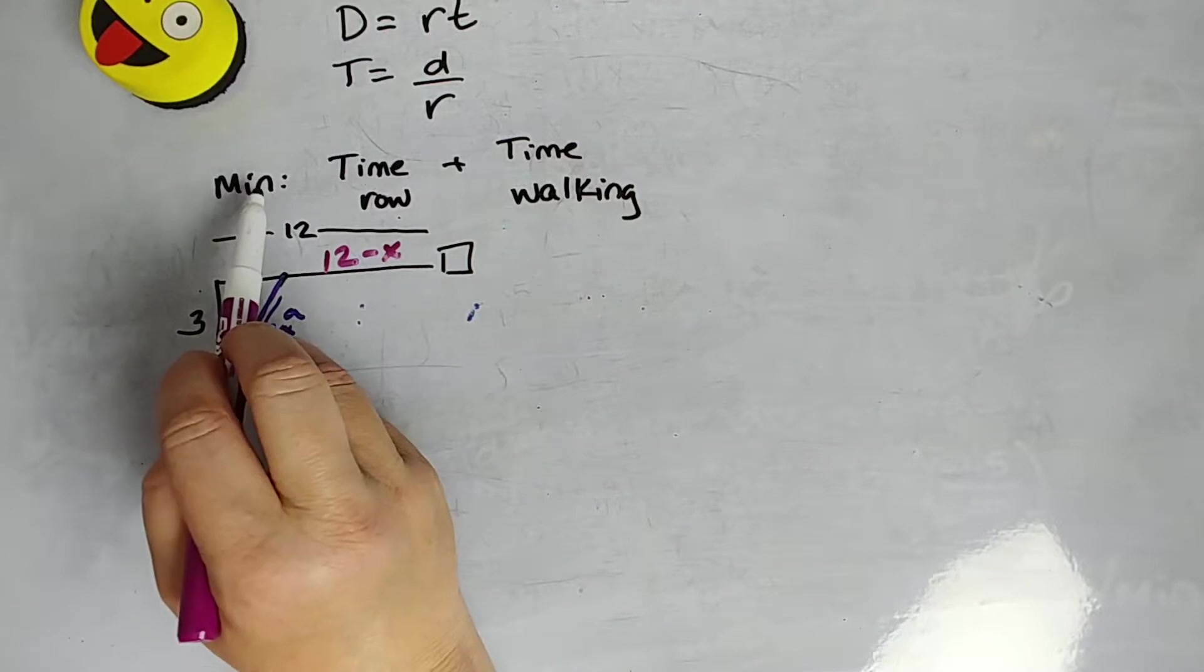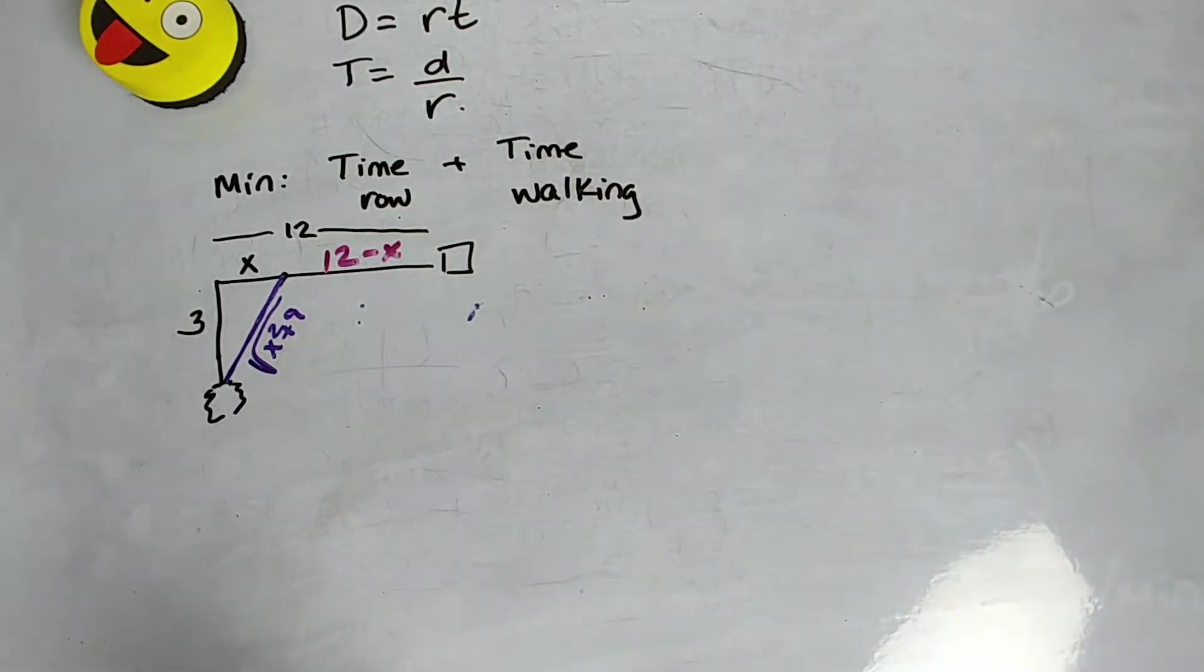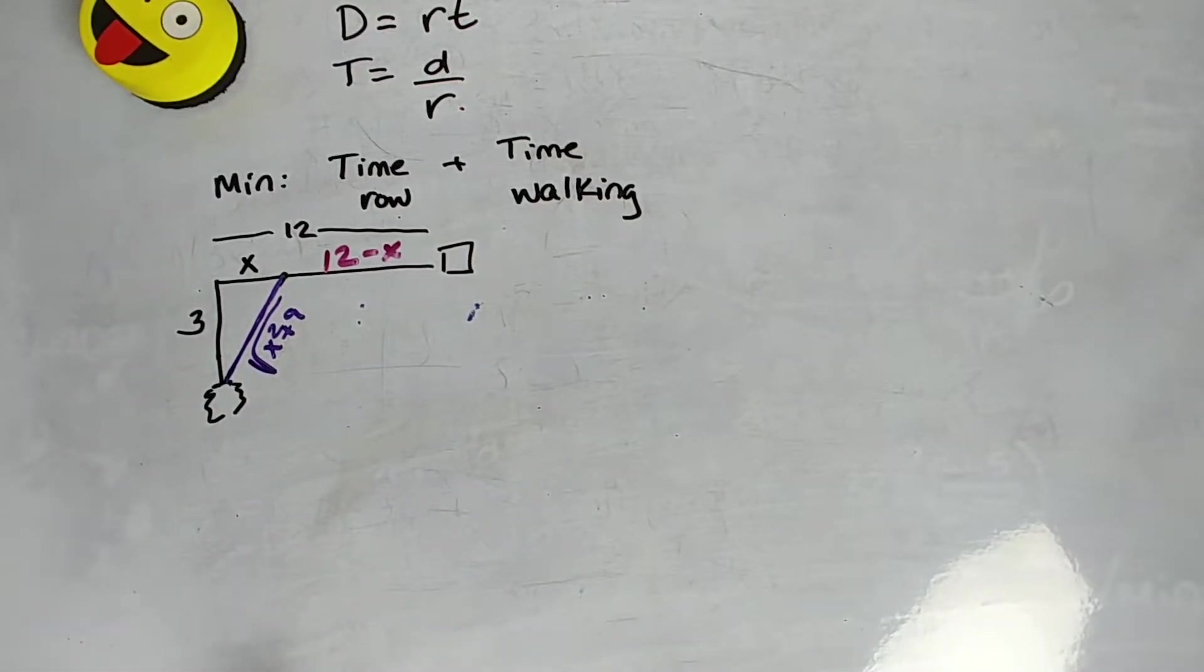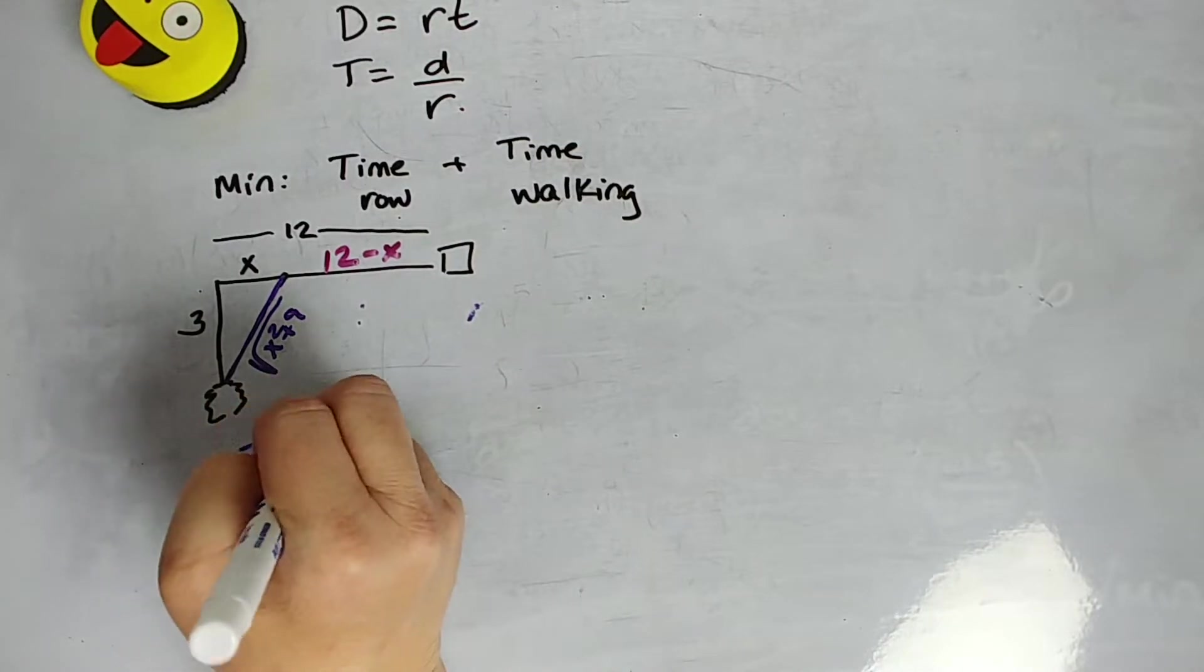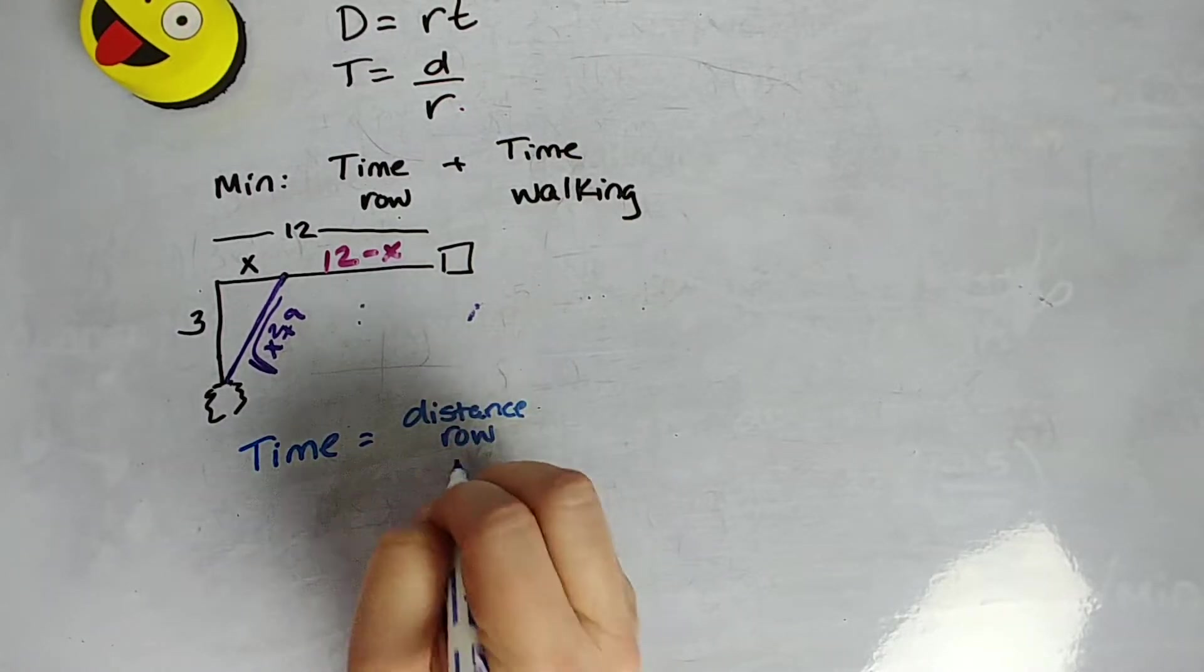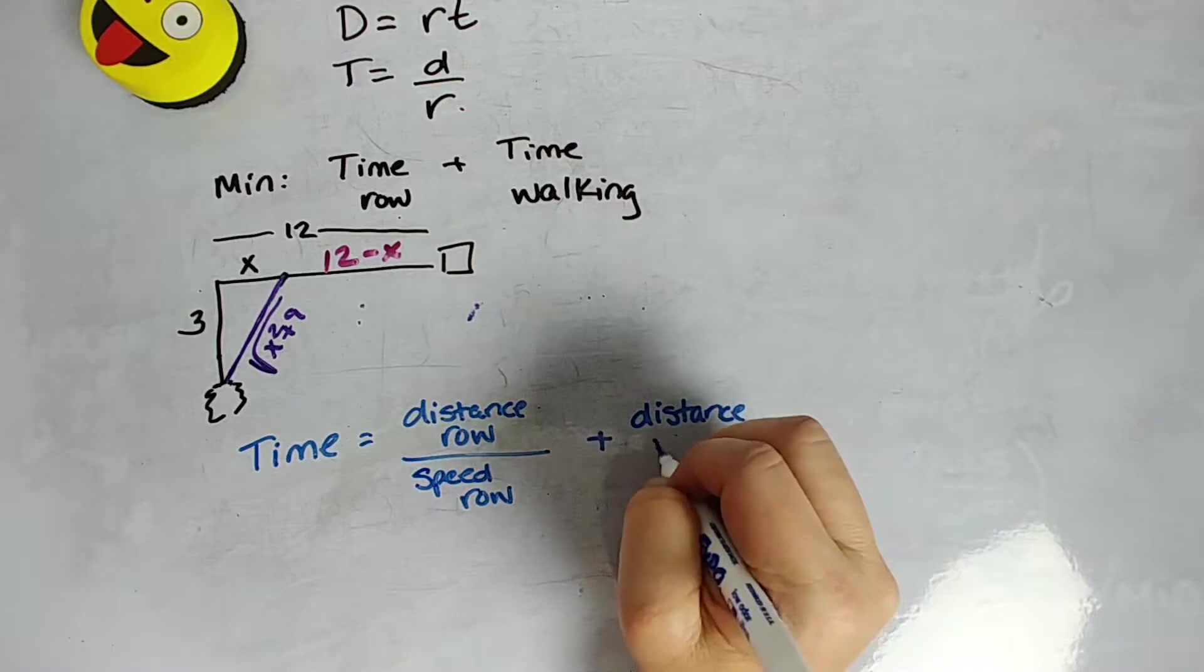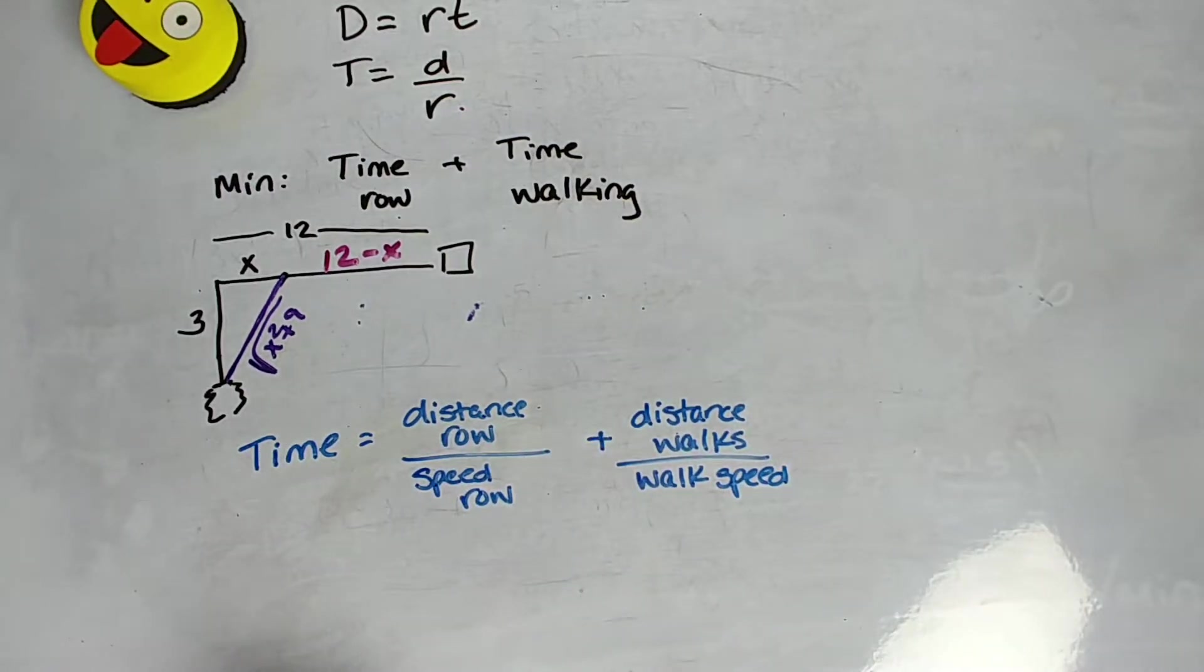Okay, so now we have some stuff figured out there. So we know that we're going to minimize time and time, but we need an equation for the time. So we said time is distance over rate. Well, the problem gave us our rates. The rate at which she rows is 2.5 kilometers, and the rate at which she walks is 4 kilometers. Okay, so let's go ahead and put this into an equation that makes a little bit more sense. Okay, so the thing that we are going to minimize is time.